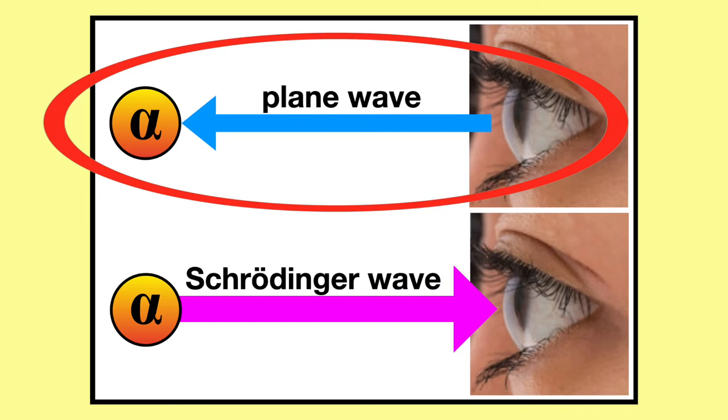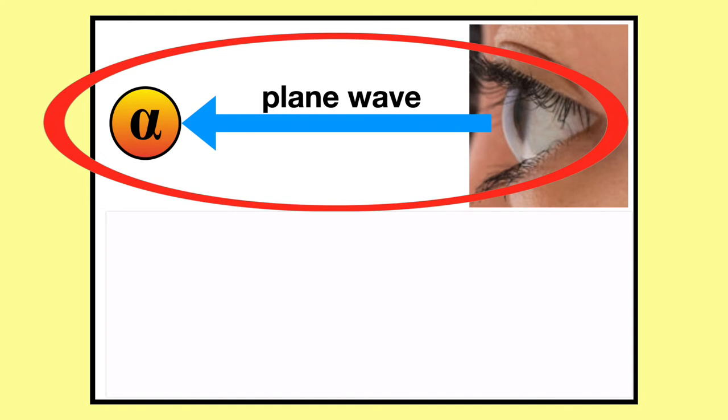If you stand back and don't look at the immediate details of what's going on, you could think that plane waves of zero energy go out from detectors and particles follow those waves backwards. That's not in detail what happens, but that's sort of a blunt or crude summary of what appears to happen.